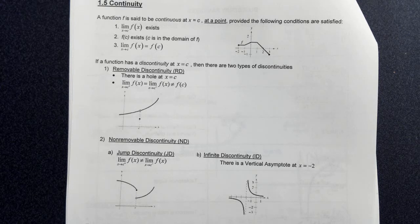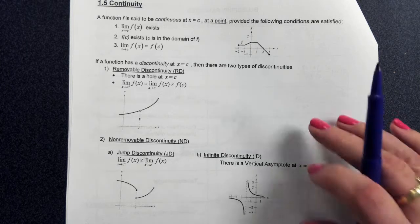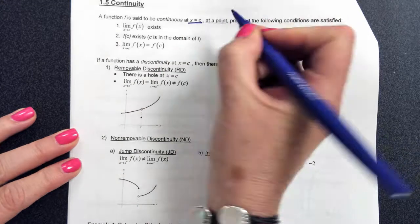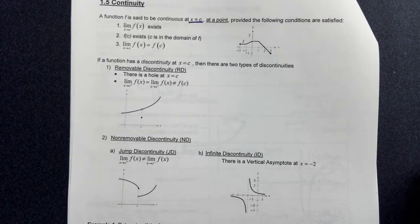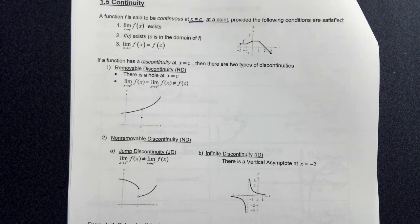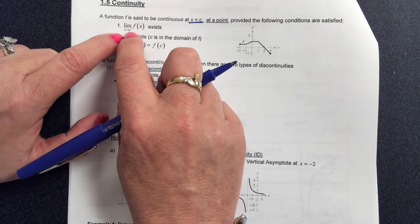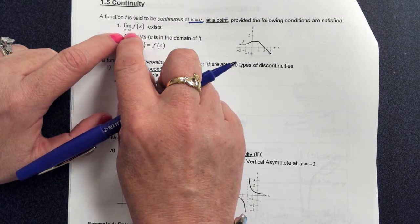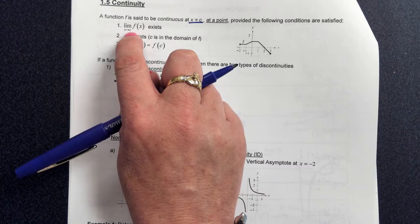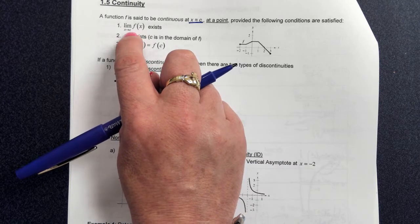When we talk about being continuous, we're looking at whether or not a function is continuous at a point. We'll call that x-value c. A function is continuous at a point if the following conditions are met. First, the limit as x approaches c has to exist — and this is a two-sided limit, so the limit from the left must equal the limit from the right.